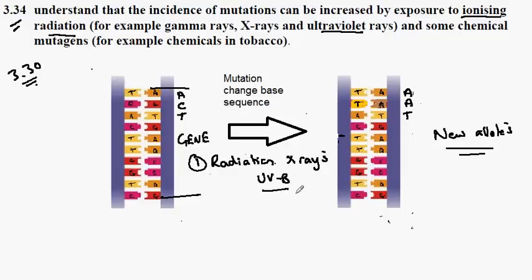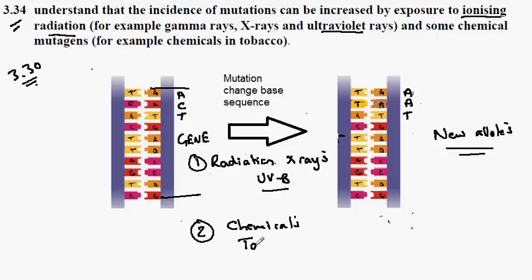In this case, the UVB rays would lead to mutations which cause diseases such as skin cancer. A second way in which this mutation can occur is due to chemicals. Perhaps one of the best known is the effect of tars in tobacco — a chemical that causes mutation to the base sequence, producing new alleles, and once more this gives rise to cancerous conditions.